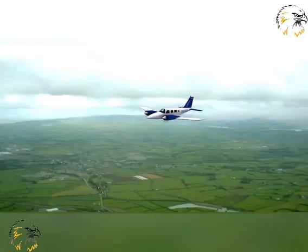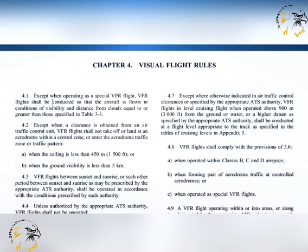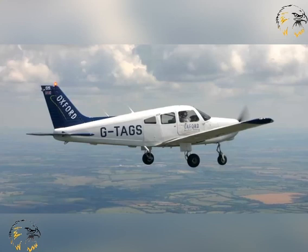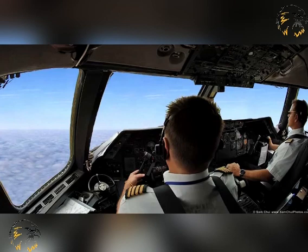That completes the lesson on the visual flight rules. As a final reminder, take care not to confuse visual flight rules with visual meteorological conditions. VFR is a set of rules, whereas VMC describes meteorological conditions defined in terms of visibility and distance from cloud. Flights in accordance with the visual flight rules must be conducted in visual meteorological conditions. However, flights conducted in accordance with the instrument flight rules are very often also conducted in visual meteorological conditions. Instrument flight rules are, like the visual flight rules, rules governing the conduct of an aircraft in flight. You will learn about the instrument flight rules in the next video.